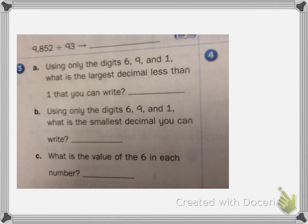Number 3 says using only the digits 6, 9, and 1, what is the largest decimal less than 1 you could write? So since we know it's less than 1, we're going to have a 0 in our 1's place. So then we have our decimal point. We want to use our biggest number in our tenths place, which would be a 9. Then we want to use our next biggest number, and then our next. So our answer would be 961 thousandths.